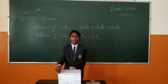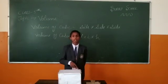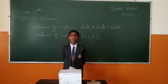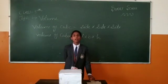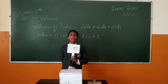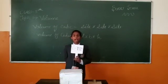Volume = length multiplied by breadth multiplied by height. Let's find the formula of length of a cuboid: volume divided by breadth multiplied by height.